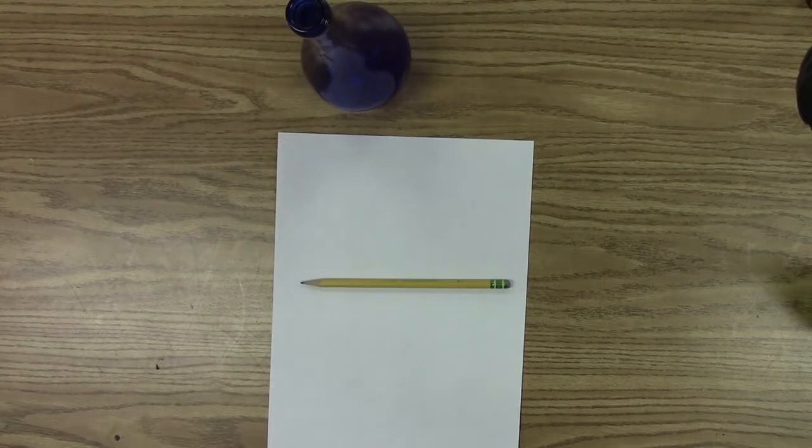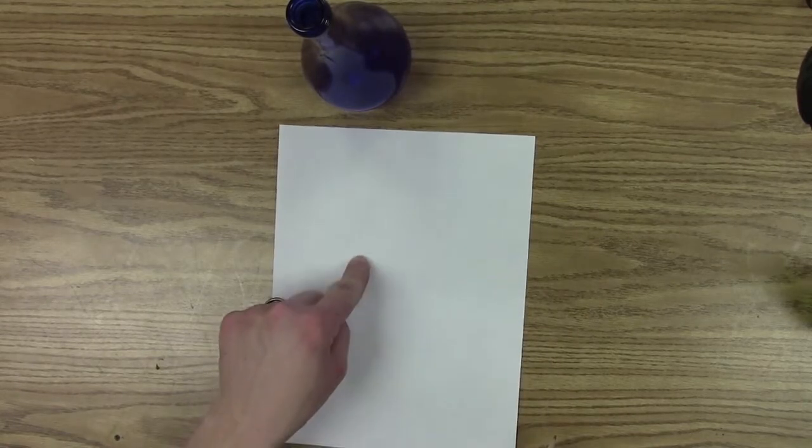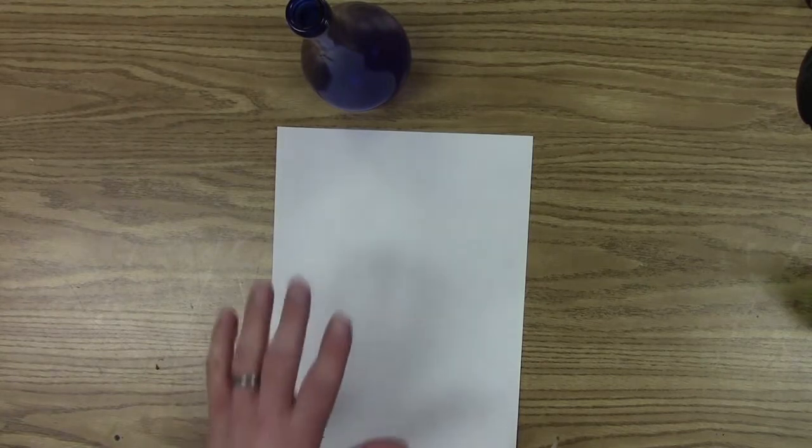In this sketchbook activity, I will need a couple different supplies to get started. First thing I'm going to need is a white sheet of paper like I have here. I can work out of my sketchbook or I can use a white sheet like I have if I don't have my sketchbook with me.